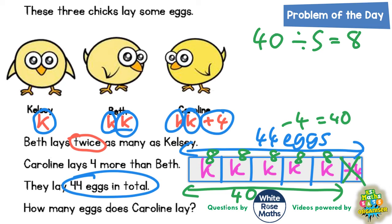From the bar model we can work out how many eggs each chick lays. K is worth eight and K represented Kelsey, so Kelsey must lay eight eggs. Beth is two K, so that's eight and another eight, meaning Beth lays 16 eggs. Caroline is two K's plus an extra four, so that's eight and eight — which is 16 — plus four, giving Caroline 20 eggs.